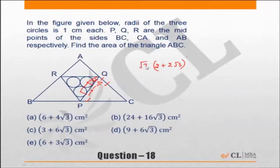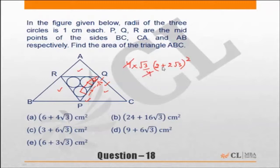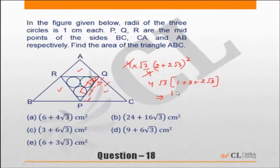The area of the equilateral triangle is root 3 by 4 times a squared. The area of triangle ABC is going to be four times the area of this equilateral triangle — there are four equilateral triangles here. So it is 4 into root 3 by 4, with the 4 cancelling out. Taking 2 as common, (1 plus root 3) squared equals 1 plus 3 plus 2 root 3. This gives 4 into 4 = 16 root 3, plus 4 root 3 into 2 = 8 root 3, giving 24 root 3. The answer is option B.